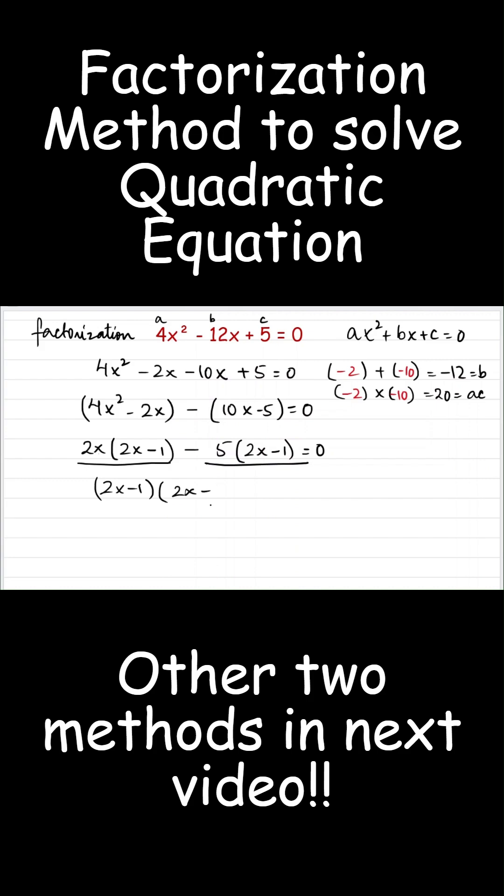From the second term, when I take out 2x minus 1 outside, I am left with minus 5 equals 0.